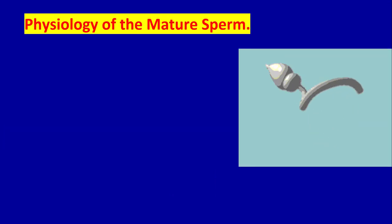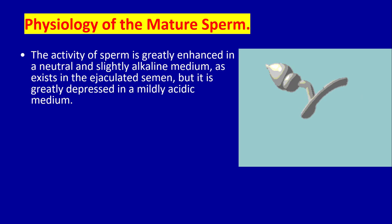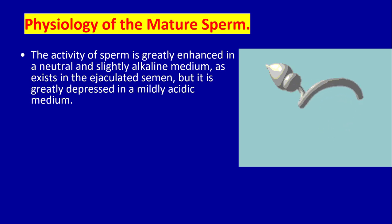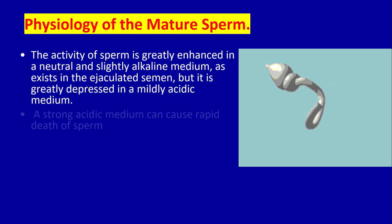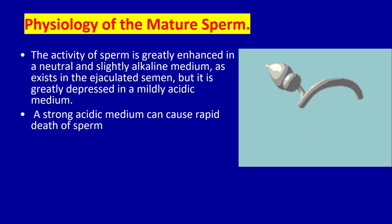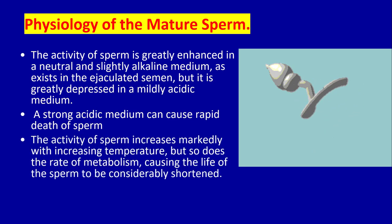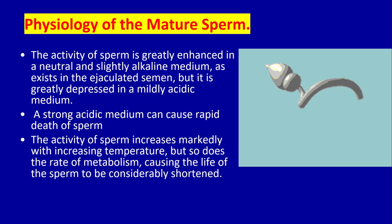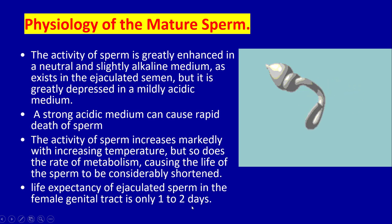The activity of sperm is greatly enhanced in a neutral and slightly alkaline medium, as exists in ejaculated semen, but is greatly depressed in a mildly acidic medium. A strongly acidic medium can cause rapid death of sperm. The activity of sperm increases markedly with increased temperature, but so does the rate of metabolism, causing the lifespan of the sperm to be considerably shortened. The life expectancy of ejaculated sperm in the female genital tract is only one to two days.